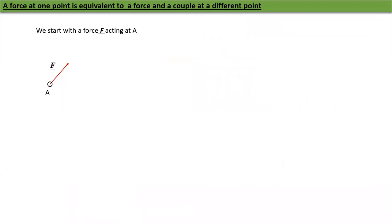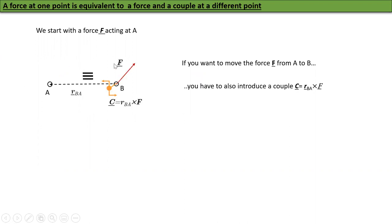A force at one point is equivalent to a force and couple at a different point. Please remember, forces can be moved provided you adjust for the couple. We will start with a force F acting at point A. Now I want to move the force from A to B. First I move the force, but I also have to introduce the net couple BA cross F. Notice from B to A, not from A to B. The momentum is from B to A because I want to cancel that couple.